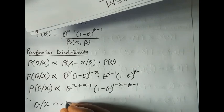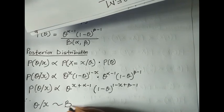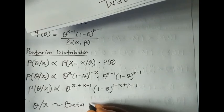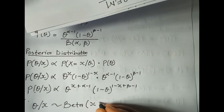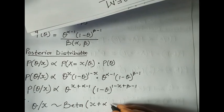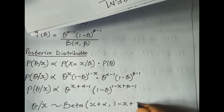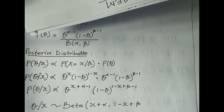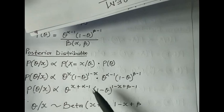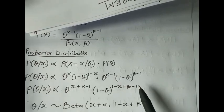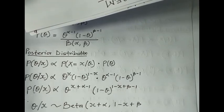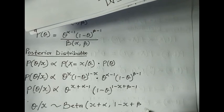The whole expression is of the form of a beta distribution. Therefore, the posterior distribution of theta given X follows a Beta distribution with parameters (X + α) and (1 - X + β).